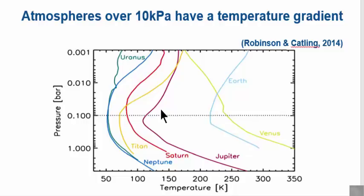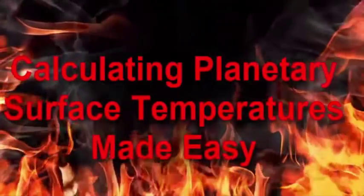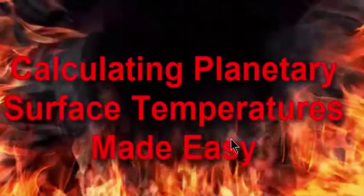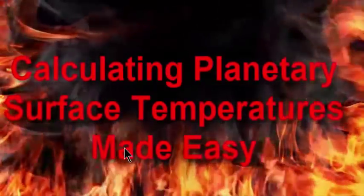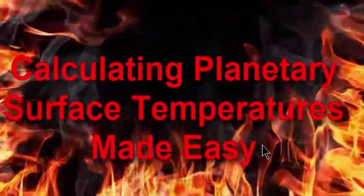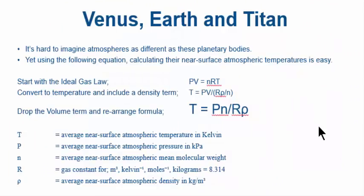It shows that any planetary body, doesn't have to be a planet as you see Titan's there, as soon as the atmospheric pressure reaches 10 kPa or 0.1 bar if you like, this level here on Earth it's the tropopause, then you start to get a pressure-induced gradient. That's what we've got here for all the planets: Uranus, Neptune, Titan, Saturn, Jupiter, Earth, and Venus. Mercury and Mars are not on here because their atmospheric surface pressure's too low. Probably a good place to start is have a quick gander at my previous video, 'Calculating Planetary Surface Temperatures Made Easy.'